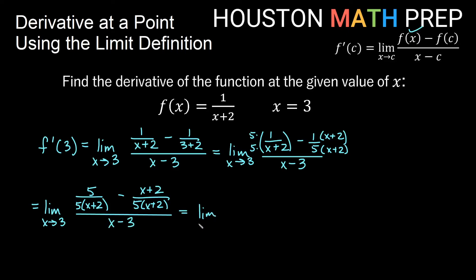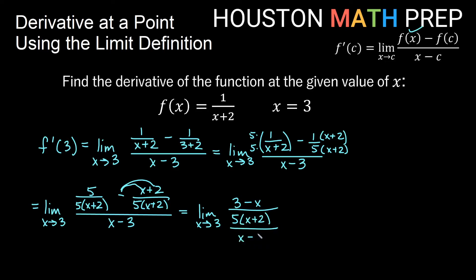Putting the numerators together, be careful when distributing — there's more than one term. We have 5 minus (x + 2), which gives 5 minus x minus 2 = 3 minus x. So the combined fraction is (3 minus x) over [5(x + 2)], all over (x minus 3).